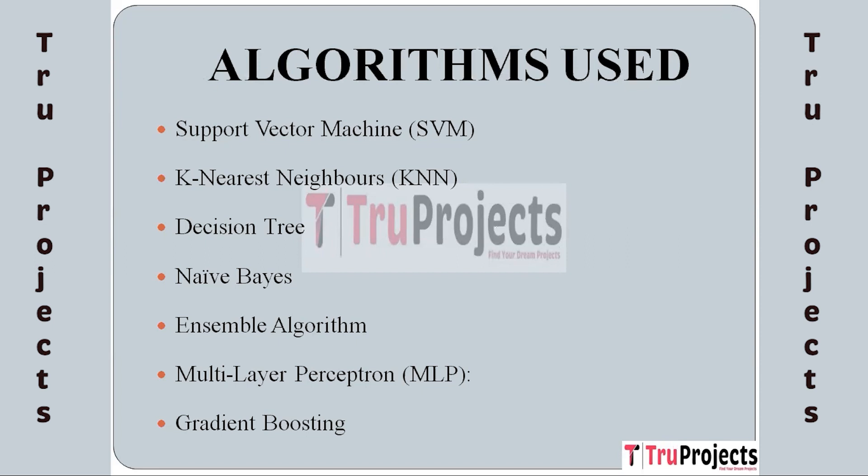The next algorithm is Naive Bayes. Naive Bayes leverages probabilistic independence assumptions for efficient health condition classification. Its fast computation and modest data requirements make it suitable for early-stage predictions and resource-constrained environments.